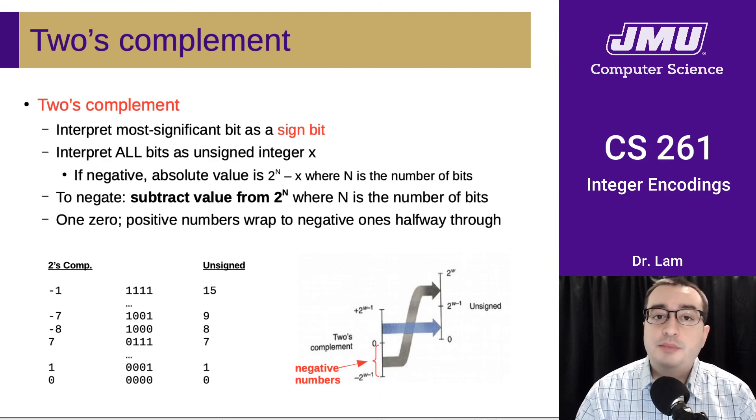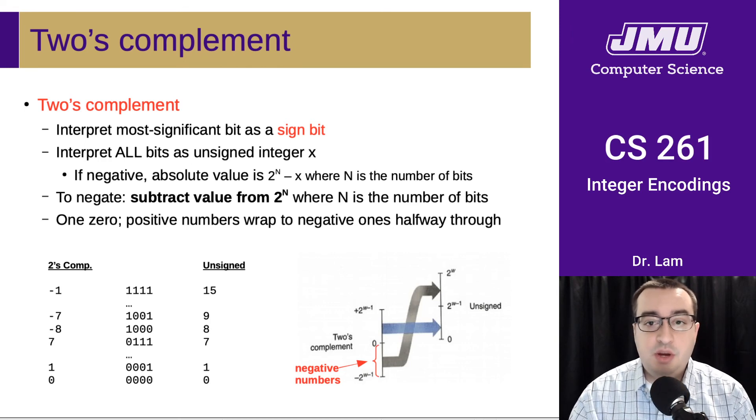So what most machines use is something called two's complement, which is unfortunately a little complicated to understand, but the arithmetic works out very nicely, and it's quite efficient, and so that's why most computers use two's complement.